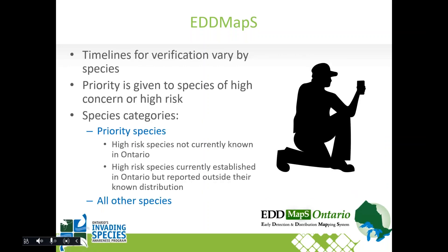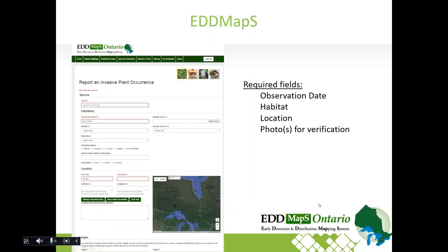When you submit a report, it's reviewed by verifiers at the Invading Species Awareness Program in Peterborough, Ontario. Priority is given to high-risk species — for example, species not currently known in Ontario like the Asian longhorn beetle, or species reported outside their known distribution such as hemlock woolly adelgid. Depending on what you're reporting, it could lead to a response from different levels of government. To make an observation you only need four things: the date you saw it, the general habitat, the location pinpointed on a map, and photos for verification.